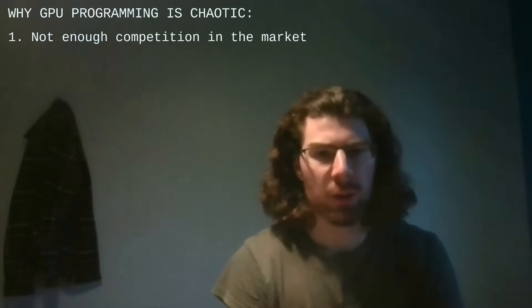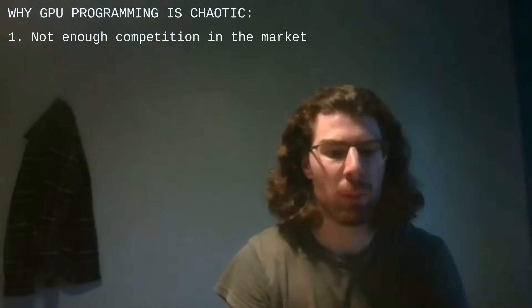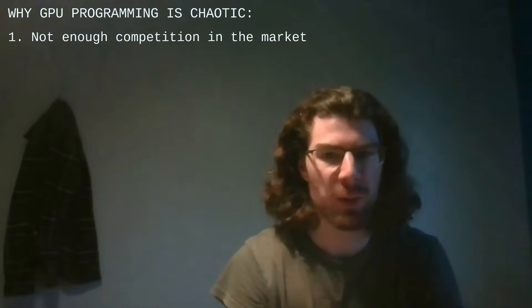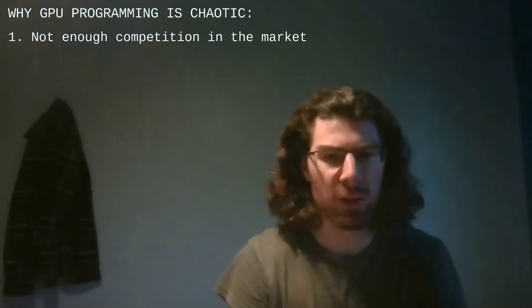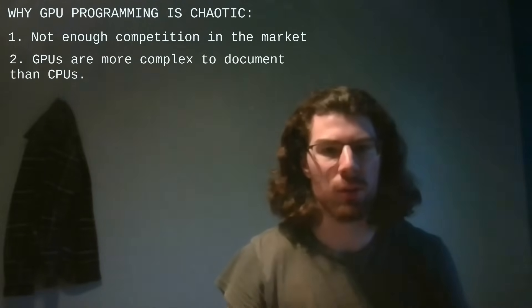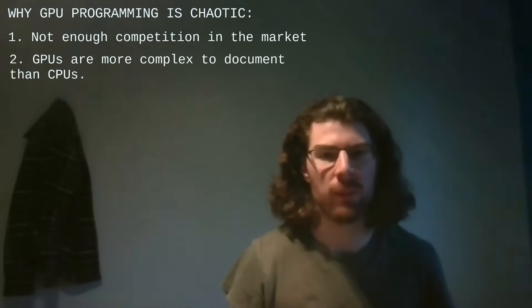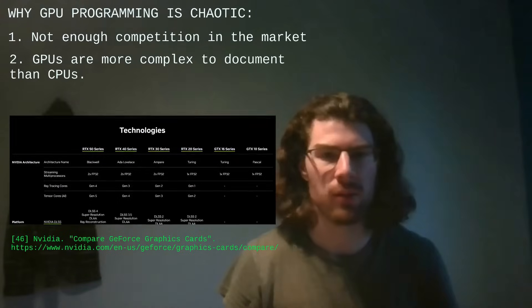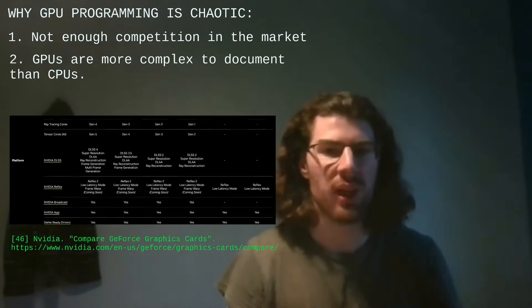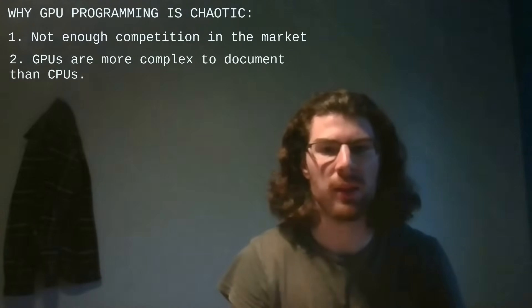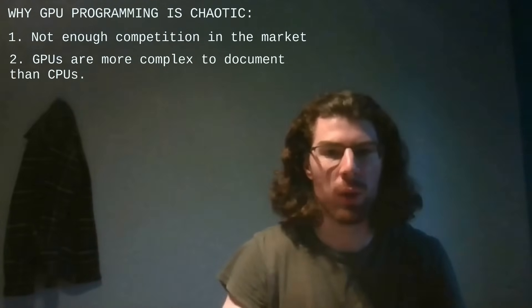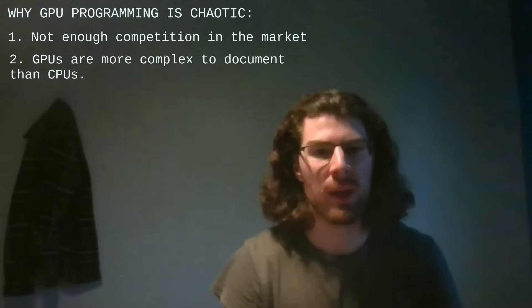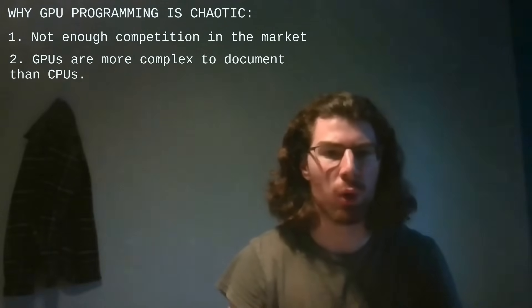From what I've gathered, the lack of competition is the main problem that plagues GPU programming, but it's not the only one. On a technical level, GPUs are massively parallel and have a lot of variations. This complexity makes them more challenging to document than CPUs, which contributes to making the technology more opaque.